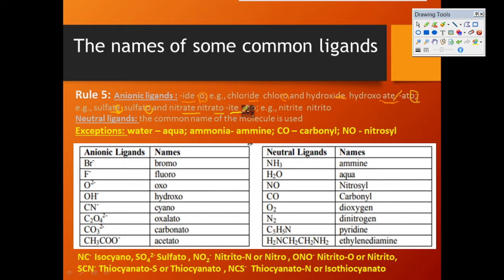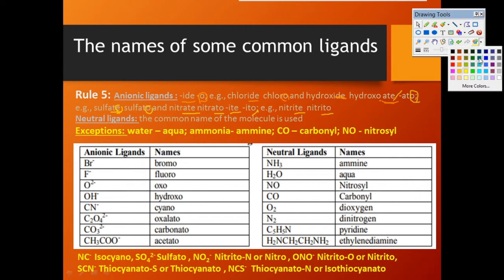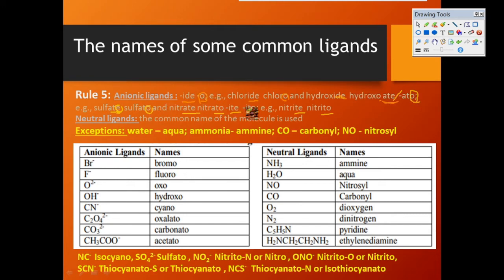The third and final case: ligands that end with '-ite' should have the final 'e' replaced with 'o', giving '-ito'. For example, nitrite ends with '-ite' and becomes 'nitrito'. To summarize for anionic ligands: '-ide' becomes '-o', '-ate' becomes '-ato', and '-ite' becomes '-ito'.